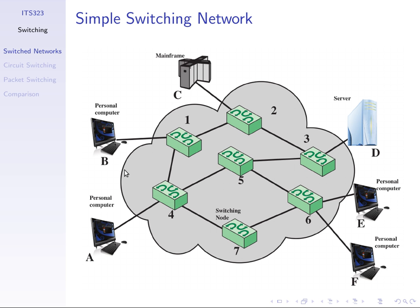Stations include servers, mobile devices, PCs, and sensors — anything that wants to create data and be the recipient of data on our network. They are located in such a way that if we want to allow any end user device, any station, to communicate with any other, we cannot have direct links between them all.